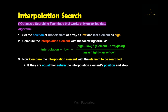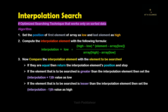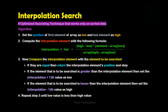The next step is to compare the element at the interpolation position with the element to be searched. If both are equal, return the interpolation element's position and stop, because it is found. If the element to be searched is greater than the element at the interpolation position, set low as interpolation plus one. Otherwise, set high as interpolation minus one. Finally, you will get the element to be searched.